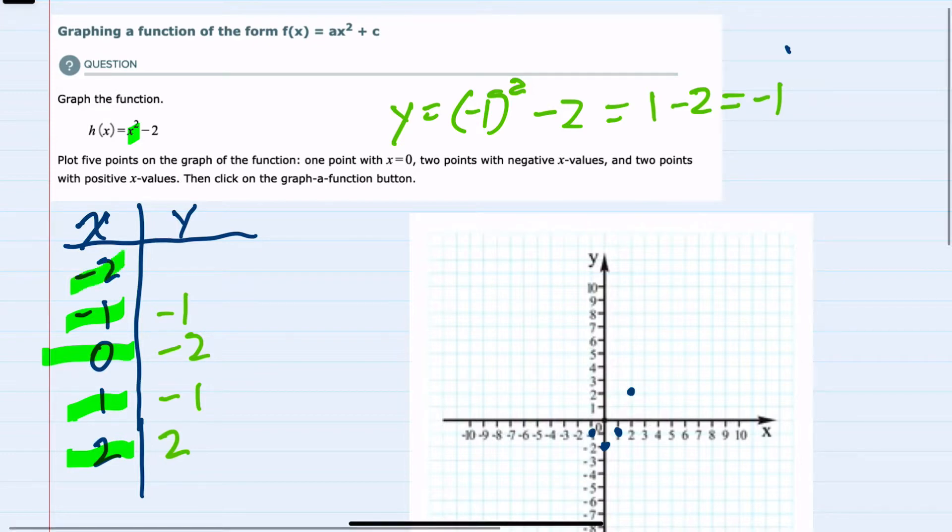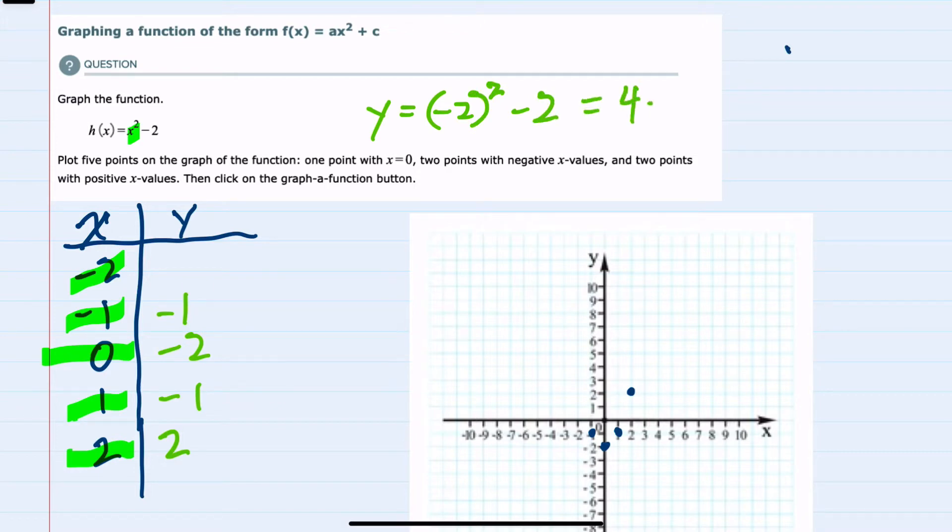And then substituting in minus 2 would give us y equals minus 2 squared minus 2. Negative 2 squared would be 4 minus 2, or 2. So we have the coordinate negative 2, 2, which graphing would be here.